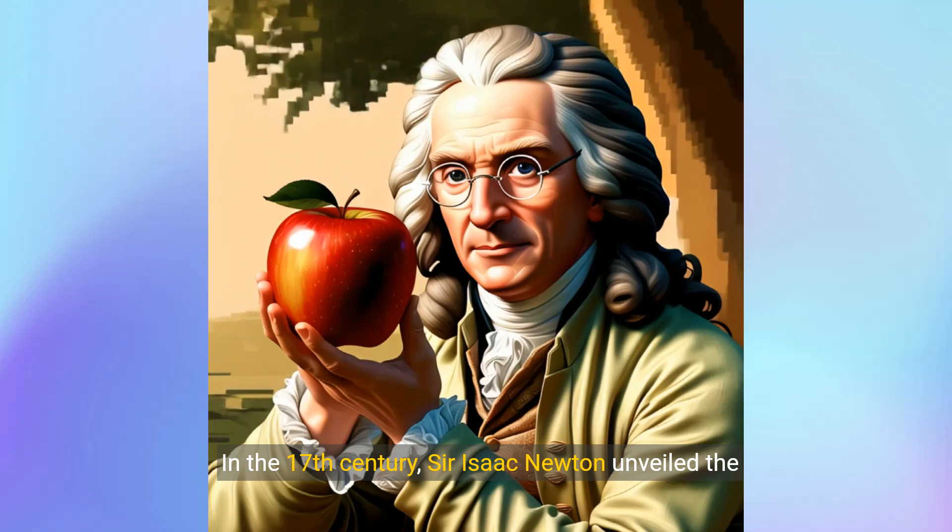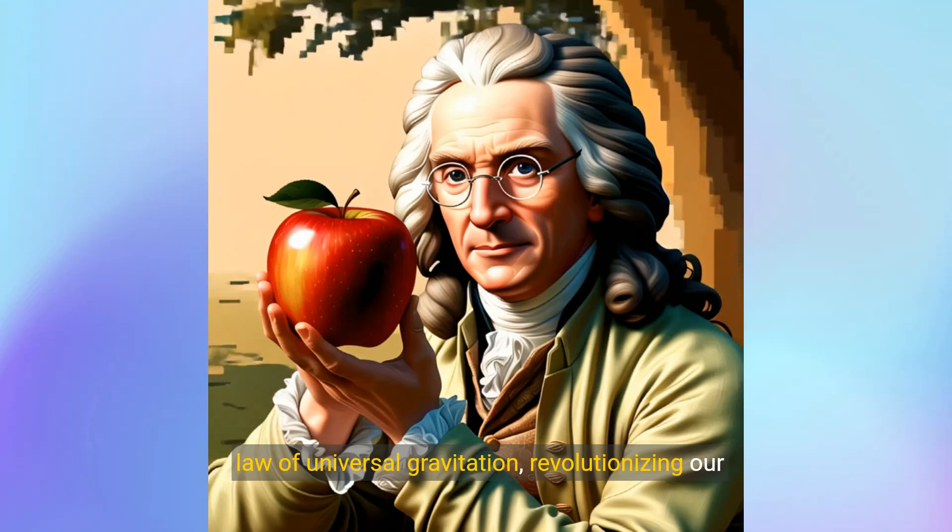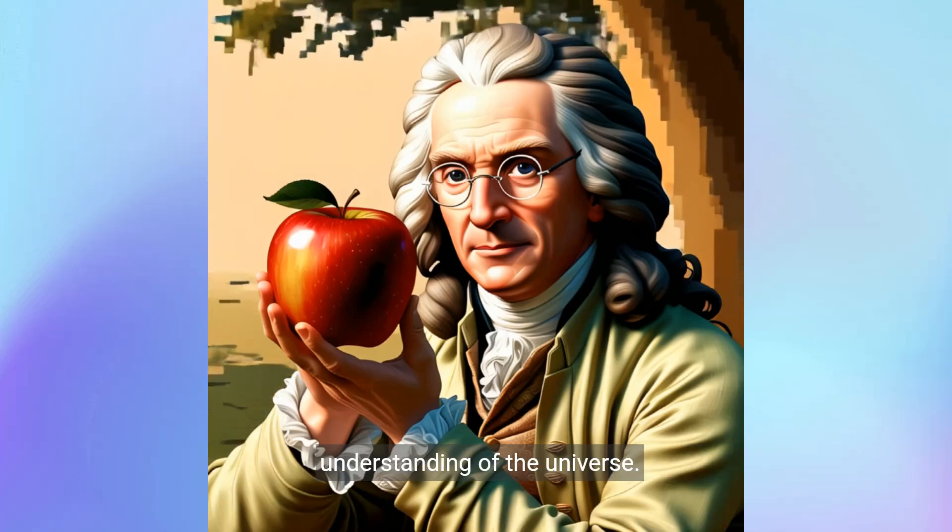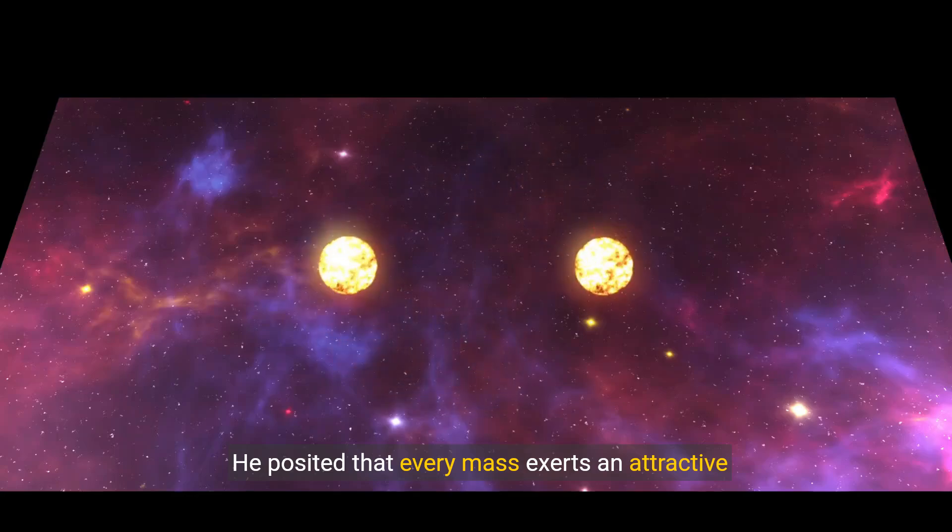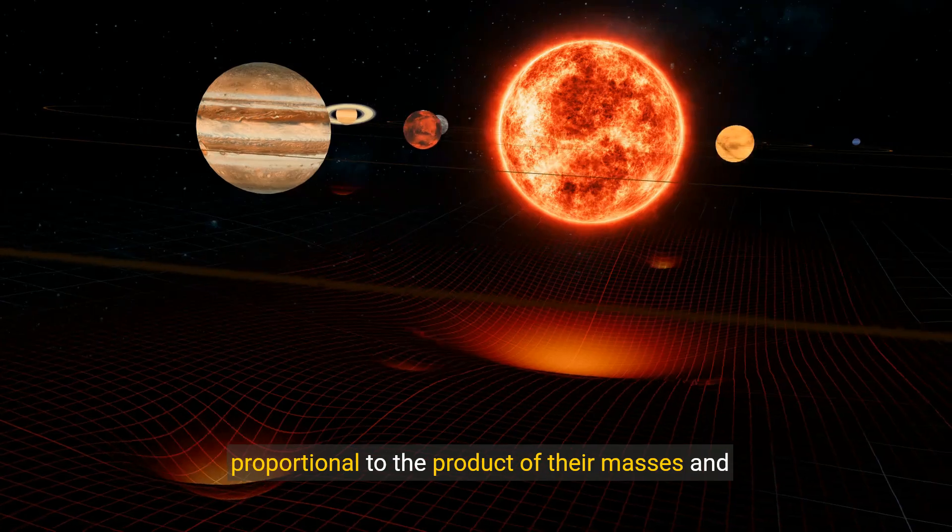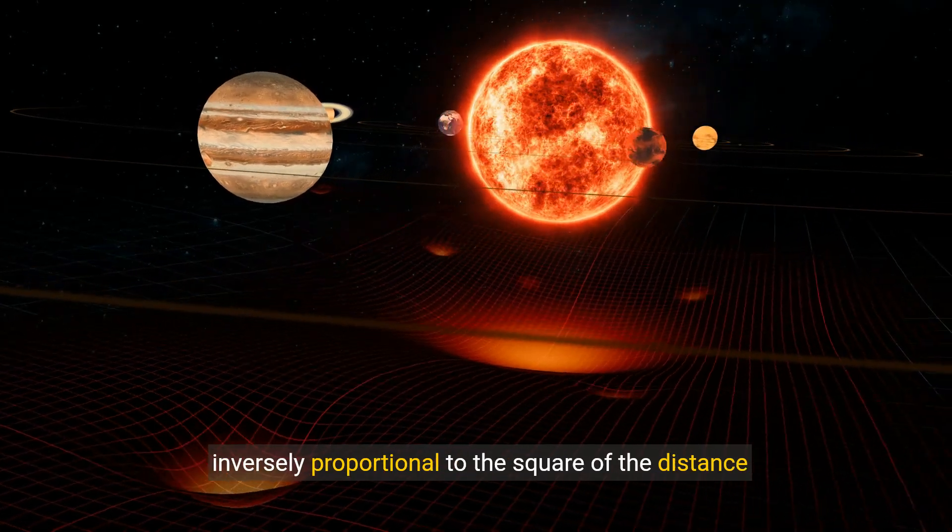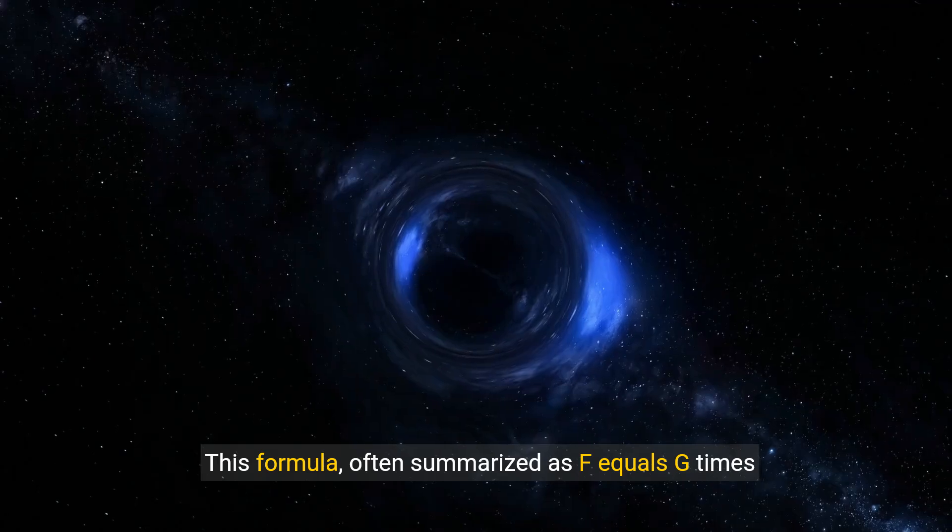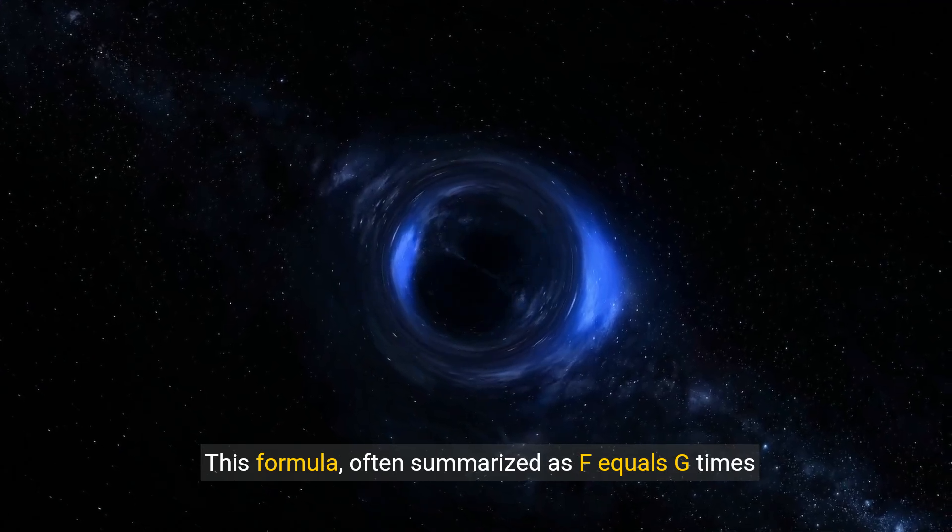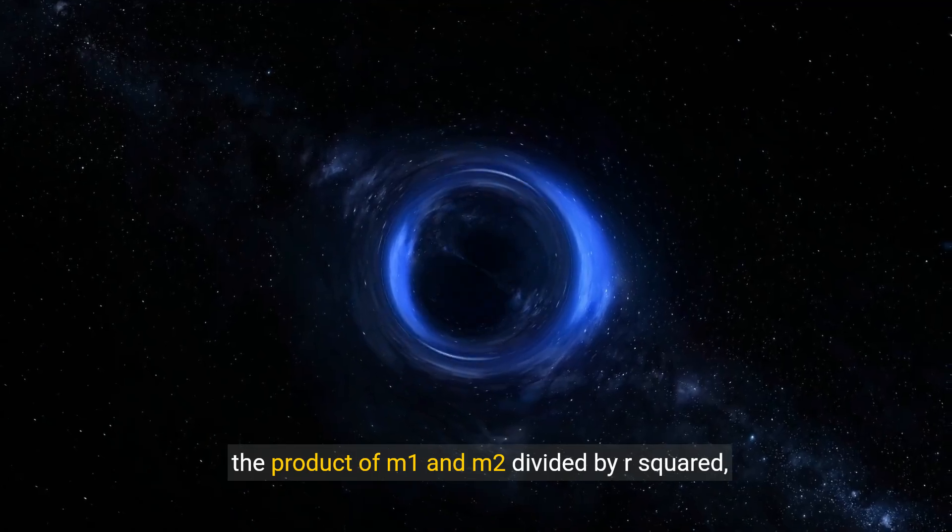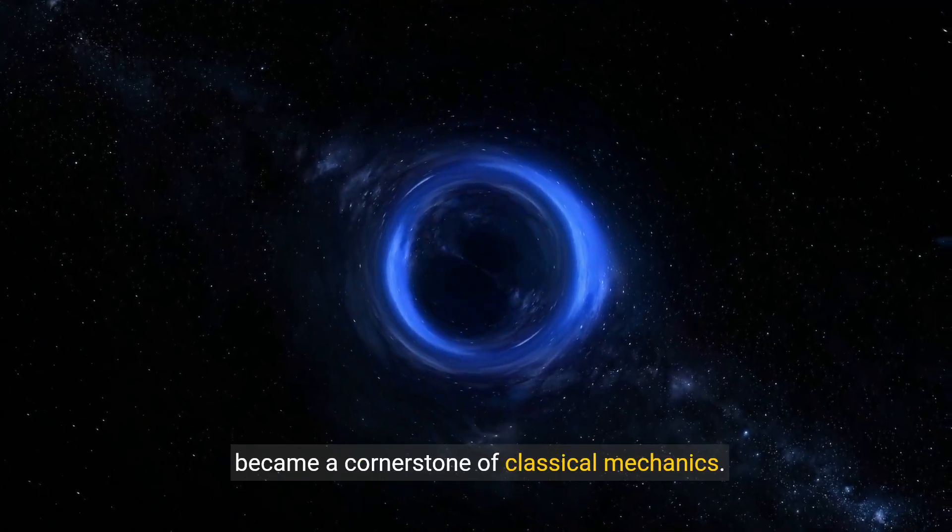In the 17th century, Sir Isaac Newton unveiled the law of universal gravitation, revolutionizing our understanding of the universe. He posited that every mass exerts an attractive force on every other mass, proportional to the product of their masses and inversely proportional to the square of the distance between them. This formula, often summarized as F equals G times the product of m1 and m2 divided by r squared, became a cornerstone of classical mechanics.